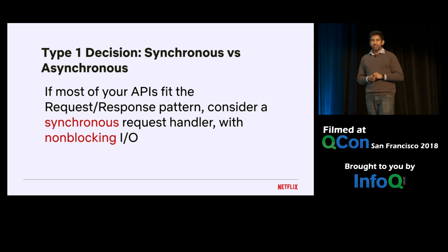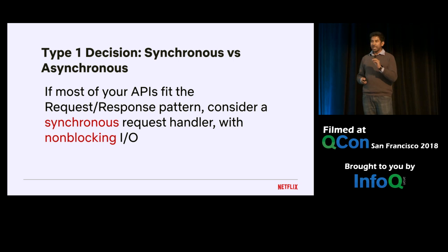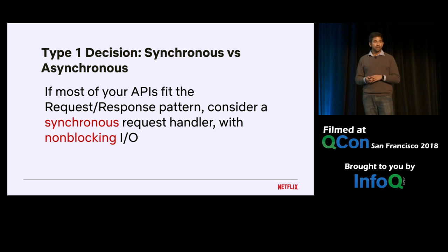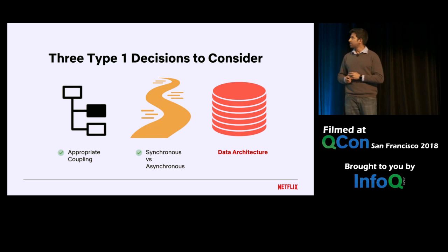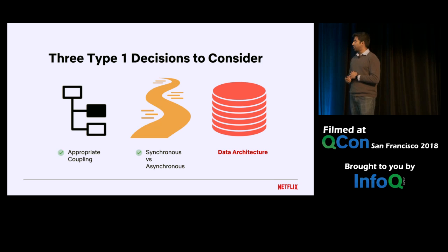So the type one decision between synchronous and asynchronous: if most of your APIs fit the request-response pattern, consider a synchronous request handler, but ensure that your I/O is non-blocking. That wraps up the synchronous and asynchronous choices.